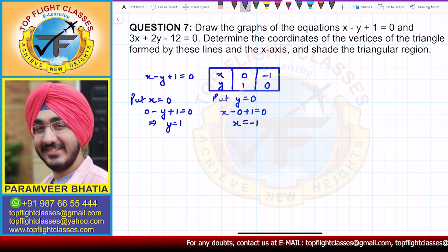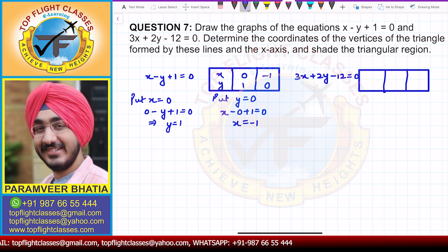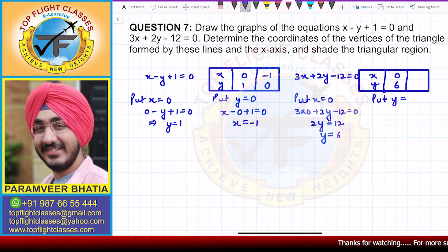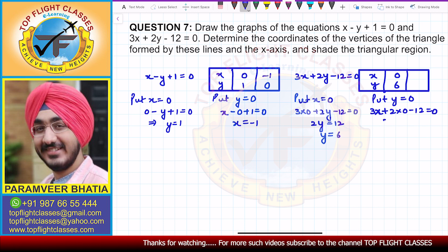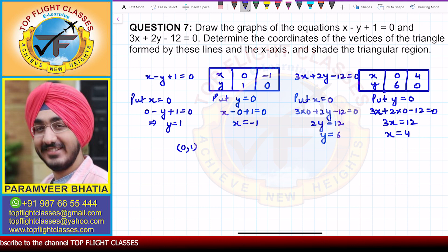The second equation is 3x plus 2y minus 12 equal to 0. I'll make another table. Putting x equal to 0: 3 into 0 plus 2y minus 12 equals 0, so 2y equals 12, giving y equal to 6 — point (0, 6). Putting y equal to 0: 3x minus 12 equals 0, so 3x equals 12, giving x equal to 4 — point (4, 0).